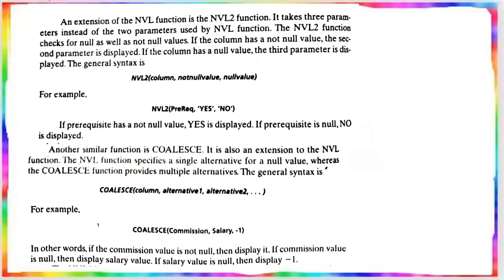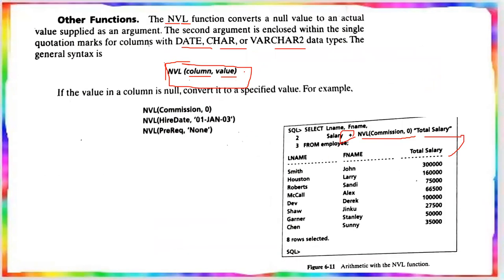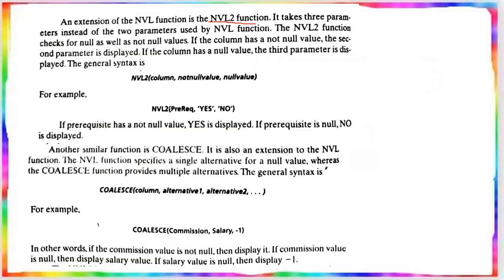The NVL2 function is an added extension to NVL. While NVL has only two parameters — one column and one value — NVL2 has three parameters, because it checks for both null and not-null values.